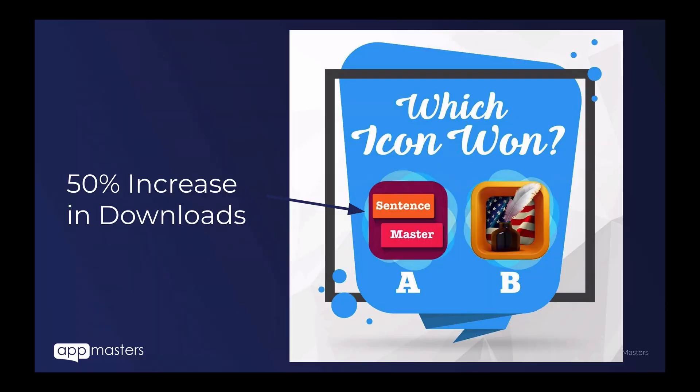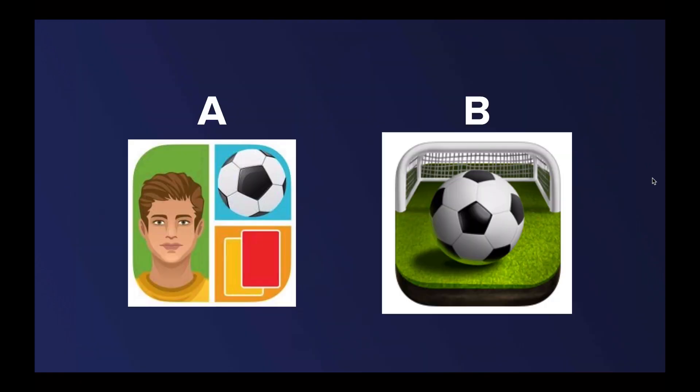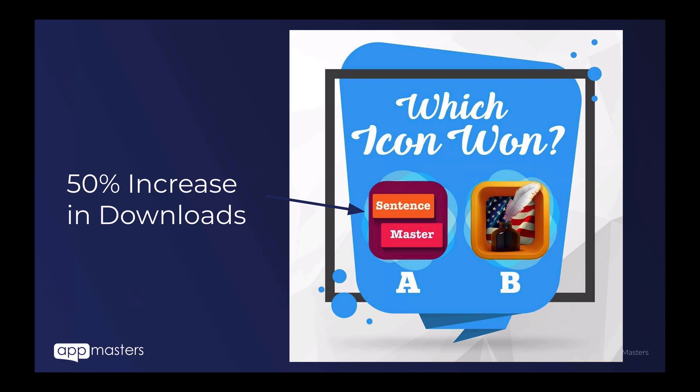Here's a client of ours that we optimized. A did win because it went from flat to 3D. And then as the icons changed — this is like a history of icons — the B was sort of outdated. We went back to a flat icon and saw a 50% increase in app downloads just by changing the app icon.